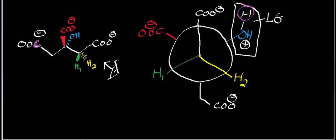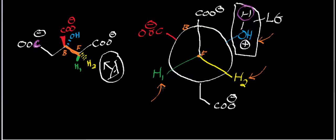I've drawn citrate in its staggered conformation, and I'm looking down this bond here — this is the bond I'm looking at. This carbon here will be our front carbon, and this one will be our back carbon. In the Newman projection, the dot in the center is our front carbon and the circle in the background is our back carbon. The molecule citrate has two protons on it: one labeled H2 and one labeled H1. For this video, we're going to treat those protons as if they are completely different, even though technically in citrate they're exactly the same — that's why I've colored them in different colors.